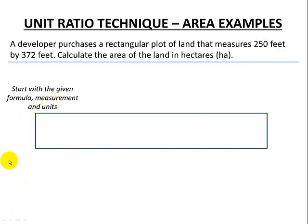We're going to start with our given formula, measurement, and units. Now we haven't per se been given a formula, but we should know that the area of a rectangle is just the length times width. So we have area is 250 times 372, and that will be feet times feet, or feet squared.